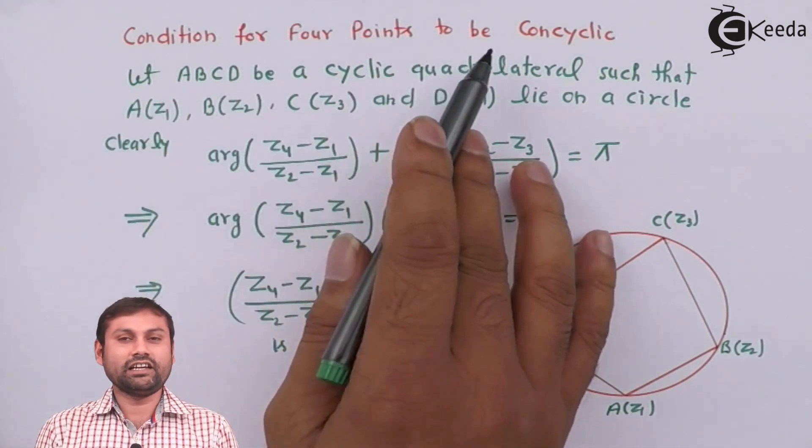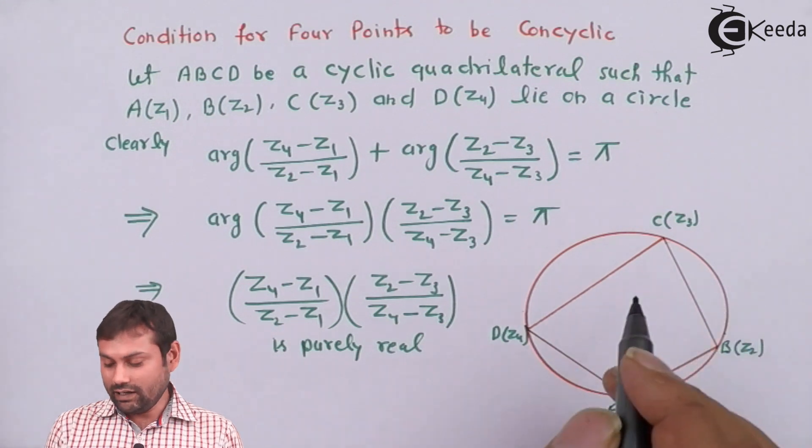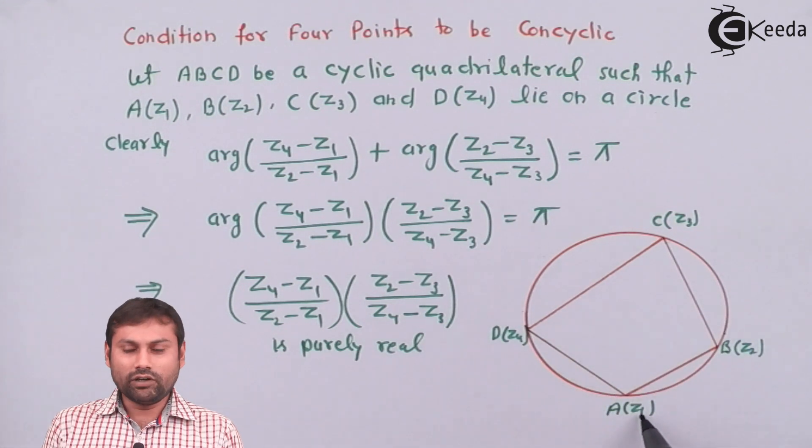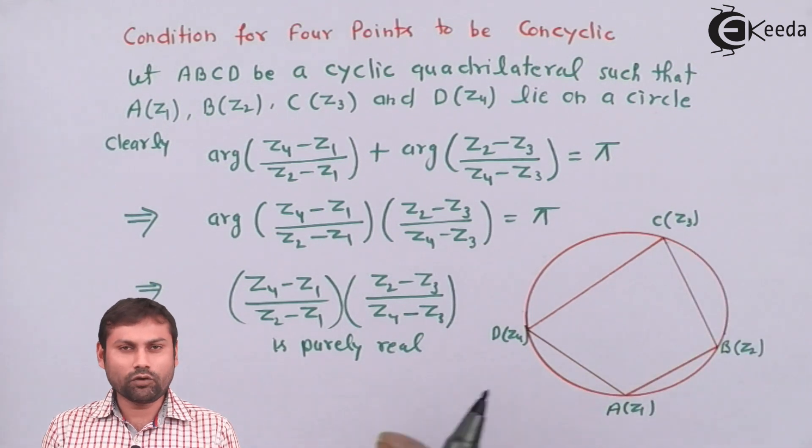Conditions for 4 points to be cyclic. So let's see. There is a cycle and A, Z1, B, Z2, C, Z3 and D, Z4. There are 4 points.